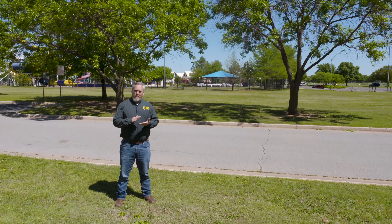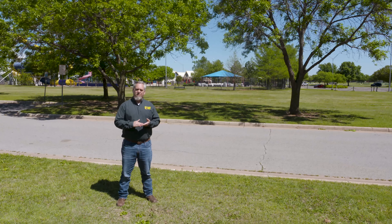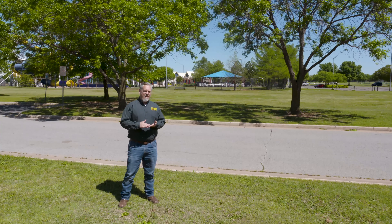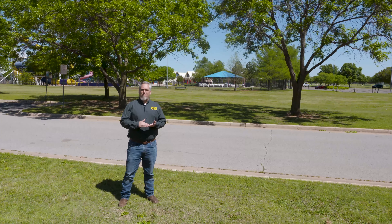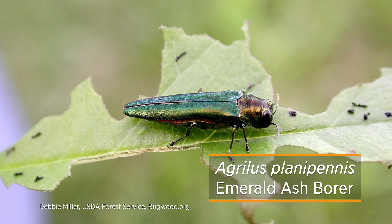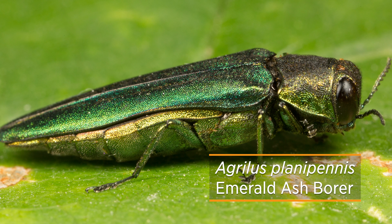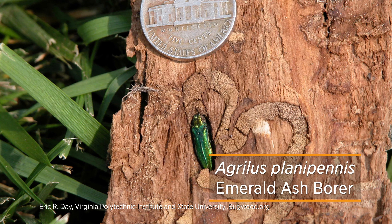There's a little bit of a problem happening throughout the country with our ash trees, and that's called emerald ash borer. Emerald ash borer is a little green bug, a little beetle, that has the capacity to do a lot of damage — both ecological and economic damage in our communities.